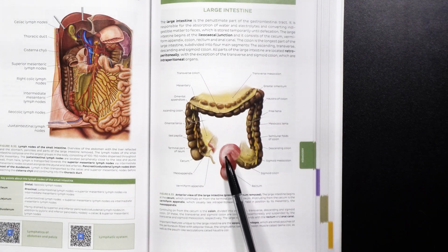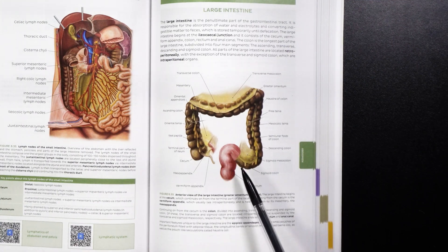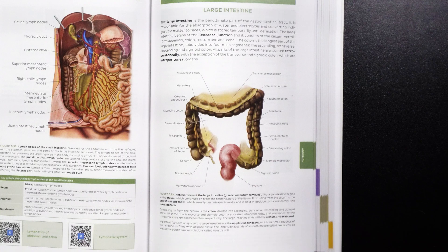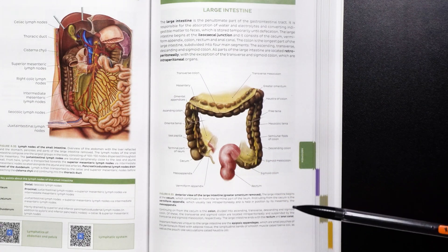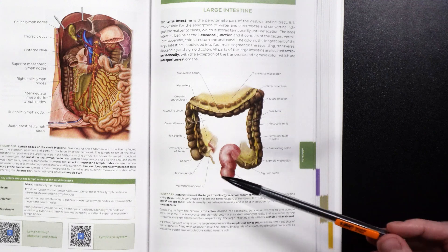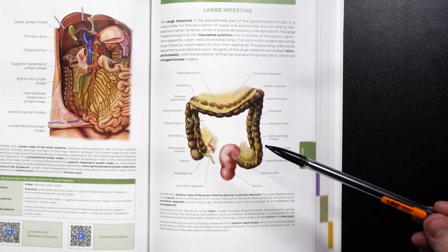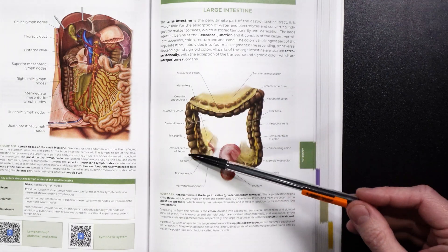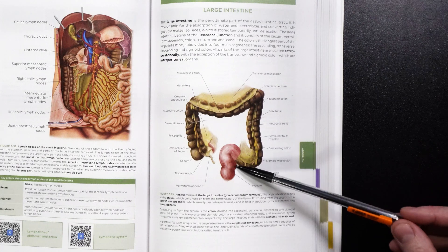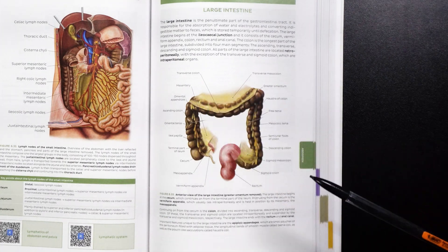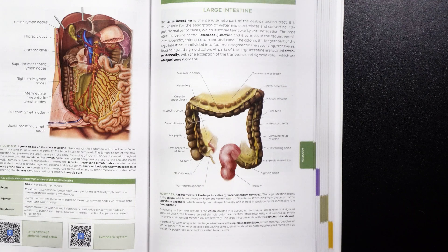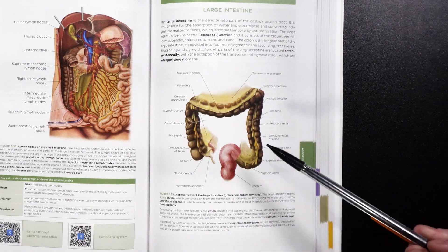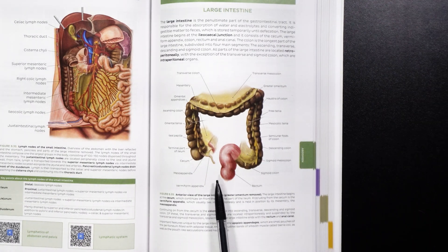Then it enters into the rectum. The rectum is actually made of skeletal muscle, which is voluntary — which is awesome. This is one of my favorite things: I can decide when to vacate the large intestine. At the same time, it makes sense for the rest of it to be made of smooth muscle, which is involuntary. There's also a lot more interesting anatomy inside the rectum, including different anal sphincters, but that is pretty much all of the large intestine.